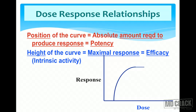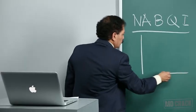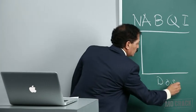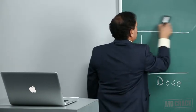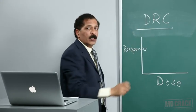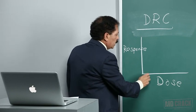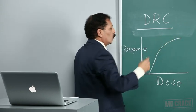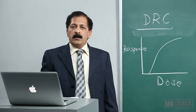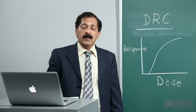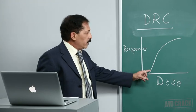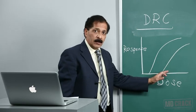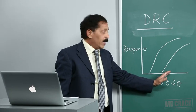Now the dose-response relationship: we plot dose on the x-axis and response on the y-axis. When a drug produces a response, we get a dose-response curve. The position of the curve on the graph decides the absolute amount of drug required to produce a response — that is called potency. If the curve is more to the right, the drug requires a higher dose and is less potent.